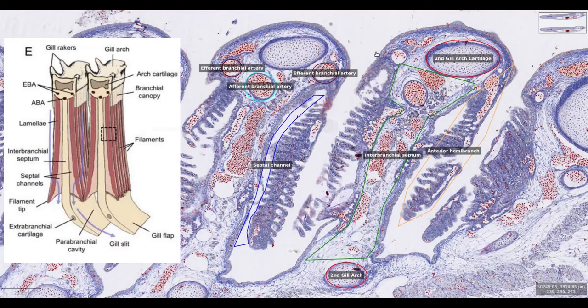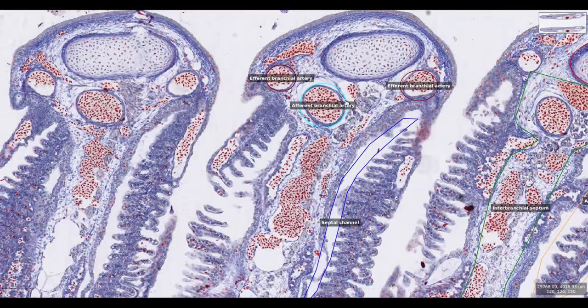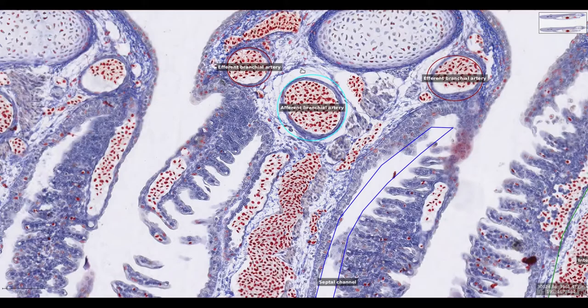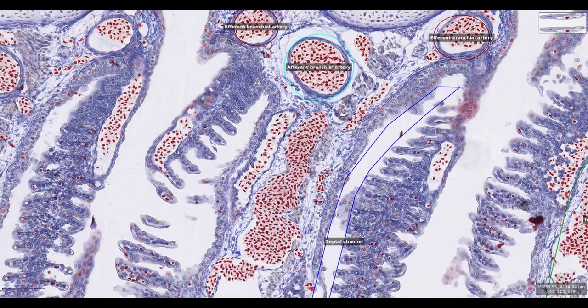In the slide we can identify the arch cartilage here and here, the interbranchial septum, and the hemibranchs on either side—the anterior or cranial and the posterior or caudal hemibranchs. Just below the arch cartilage there are three blood vessels: a pair of efferent branchial arteries and a single afferent branchial artery. We'll come onto circulation in the gills a bit later.